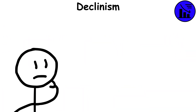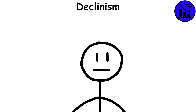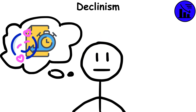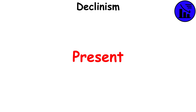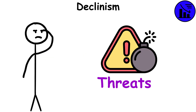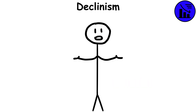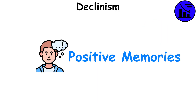Declinism. This is the belief that the world and our society is inevitably getting worse. It is caused by our tendency to view the past with rosy retrospection — a positive outlook — and to view our present with a negative bias. In the present, we tend to focus on the negative things that happen as a survival instinct to always be on the lookout for threats that could harm us. Since we do not need to have the same survival instinct when thinking of the past, positive memories are more likely to be remembered.